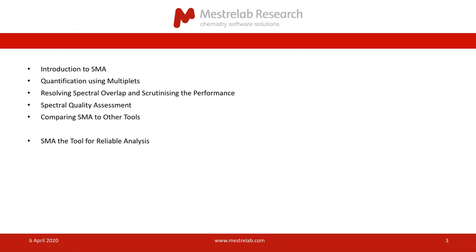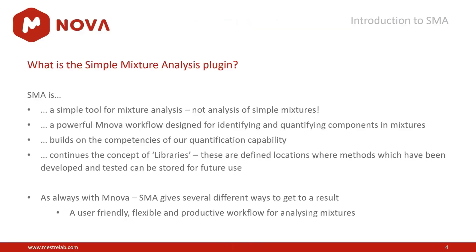Without further ado, today we are talking about SMA, which is a plugin of MNOVA. It stands for Simple Mixture Analysis — what we really mean is a simple tool for analyzing mixtures. It is not limited to analyzing simple mixtures only, but rather it is a very simple workflow. What the workflow does is identify and quantify components in the mixture. It uses quantification capabilities built within MNOVA, and there will be a session next week on quantification looking at concentration and purity/potency for APIs.